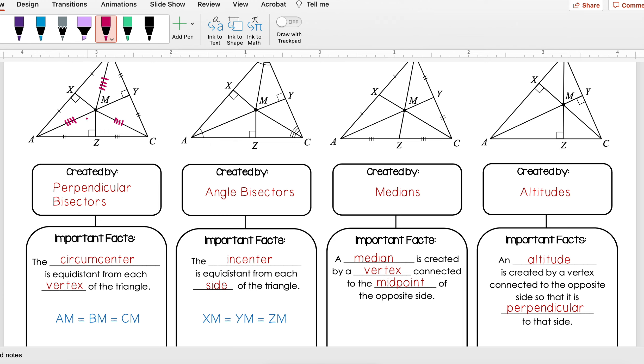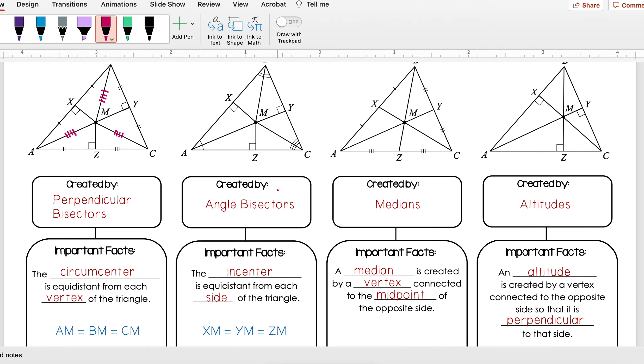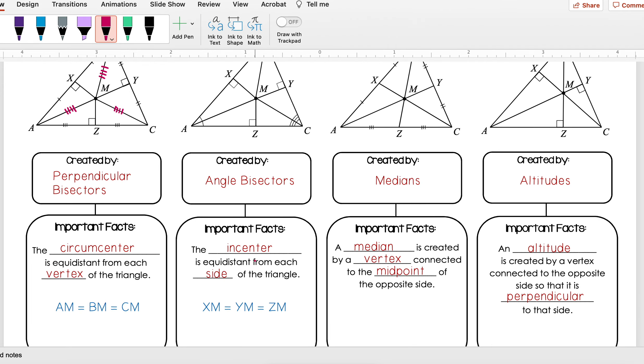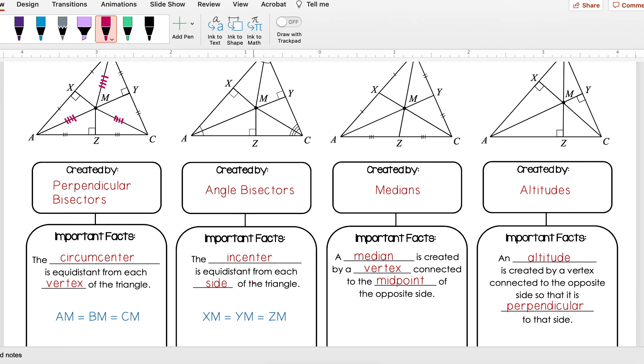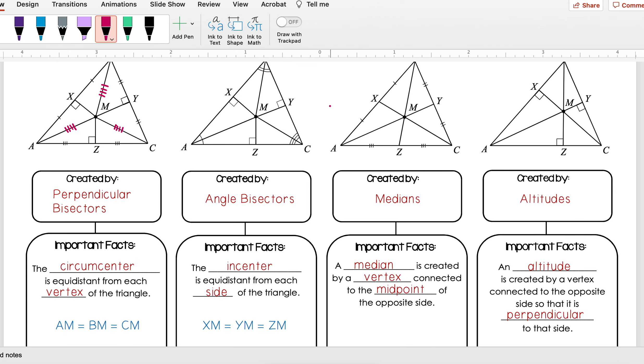All these lines that go to my vertices end up being congruent to each other. Something important to remember about the incenter is that the incenter is equidistant from each side of the triangle. So here, if I have these segments that are angle bisectors of my vertices, then these lines that are perpendicular to the sides are going to be congruent. So XM is equal to YM, which is equal to ZM.